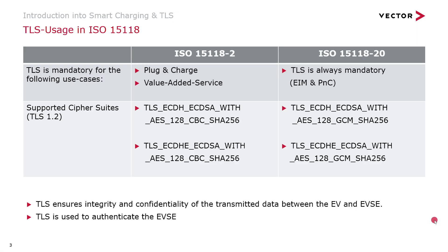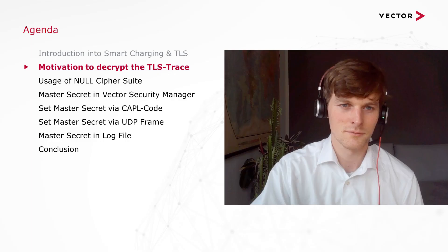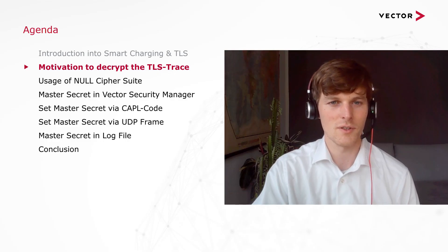TLS is used for plug and charge and value added services if you use ISO 15118-2, and in the next document ISO 15118-20, TLS will always be mandatory — for plug and charge and EAM. Both documents use TLS 1.2 and the following cipher suites. TLS is not only used to protect the confidentiality of transmitted data; it also ensures the integrity and authenticates the EV. So what is the motivation to decrypt the TLS trace?